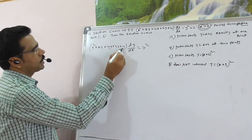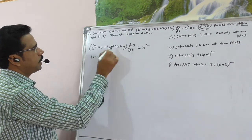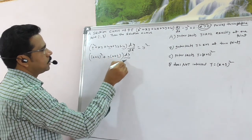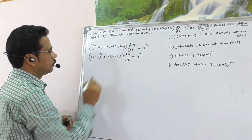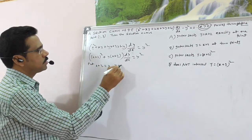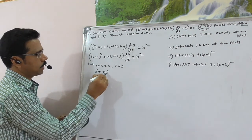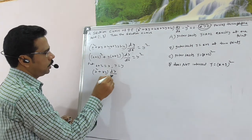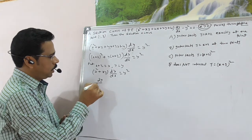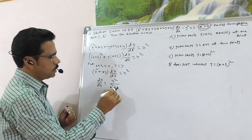Observe that x² + 4x + 4 = (x+2)², so the equation becomes (x+2)² + y(x+2) · dy/dx = y². Now substitute x+2 as X and y as Y to rewrite: X² + XY · dY/dX = Y². This gives dY/dX = Y²/(X² + XY).